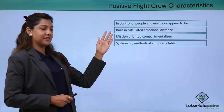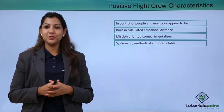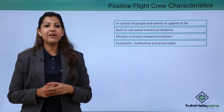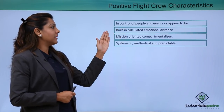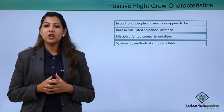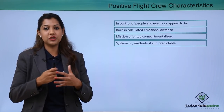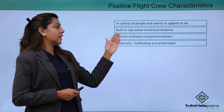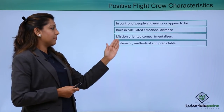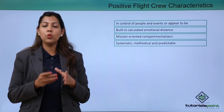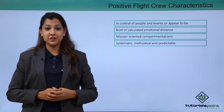Positive flight crew characteristics include: they appear to be in control of people and events — looking very sure of themselves and in command of the situation. They have a calculated emotional distance and maintain diplomacy and tactfulness. They are mission-oriented compartmentalizers, working methodically on a mission. They have a systematic, methodological, and predictable way of working, where everything proceeds according to a process and a plan of action.